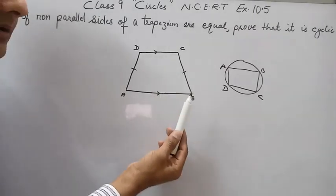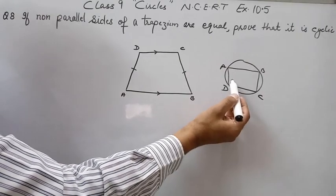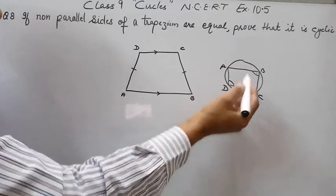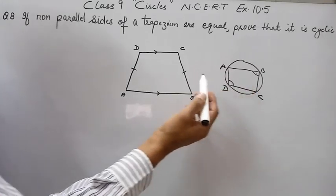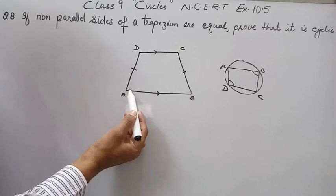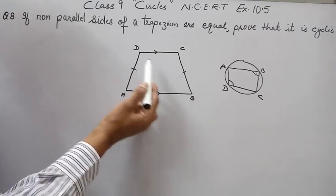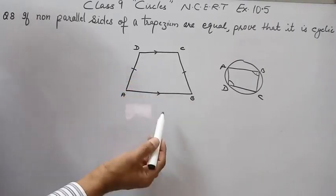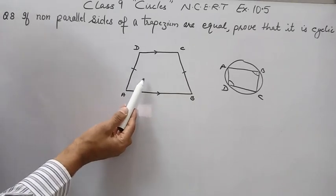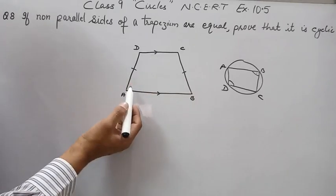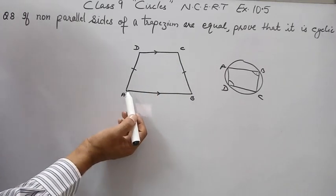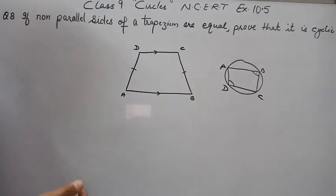A quadrilateral in which the sum of opposite angles is 180 degrees is cyclic. If we can prove angle A plus angle C equals 180 degrees, or angle B plus angle D equals 180 degrees, then we can say this trapezium is a cyclic quadrilateral. So our work is to prove the sum of opposite angles is 180 degrees.